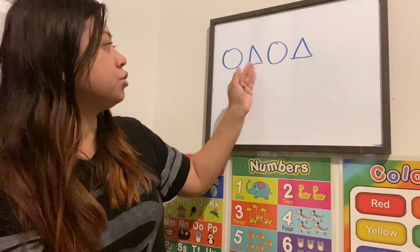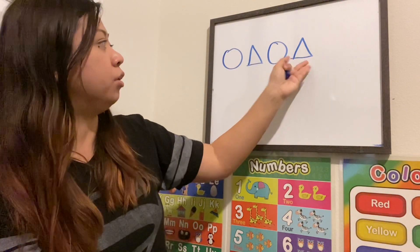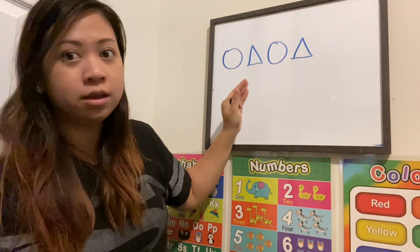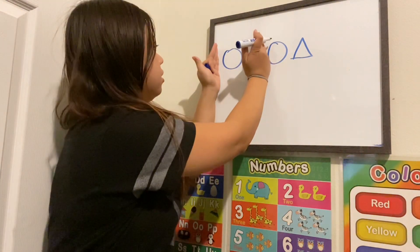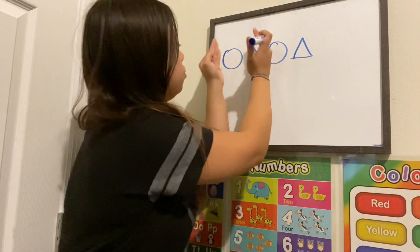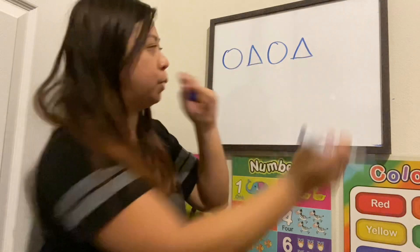This is repeated right here: circle, triangle, circle, triangle. So we're going to figure out what comes next in the pattern.